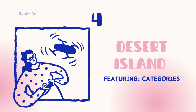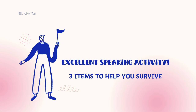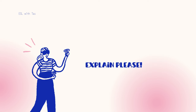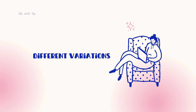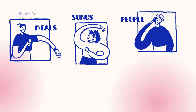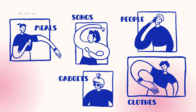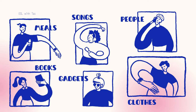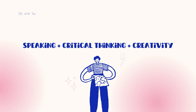Activity four is Desert Island. If you're unfamiliar with the concept, it's an excellent speaking game where each student has to choose three items they would want with them if they were stranded on a desert island. The items can be anything, but they have to explain why they chose them and how they would help them survive. This game can also be played with variations — three people, three songs, three meals, three pieces of clothing, three gadgets, three books. You can pick any category and still get great answers. It's a great way to practice speaking, critical thinking, and creativity while learning about students' preferences and priorities.